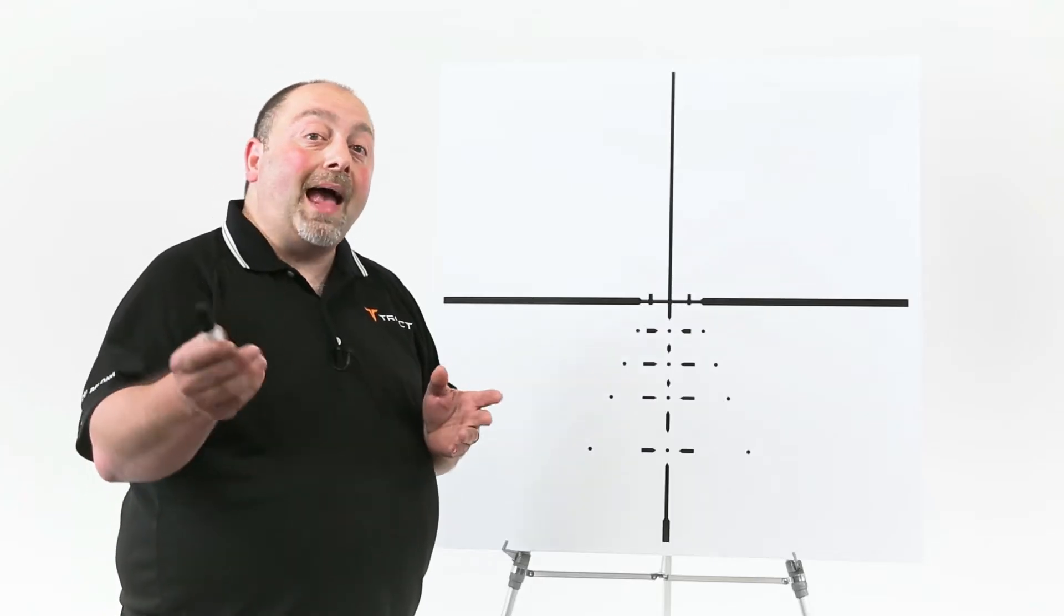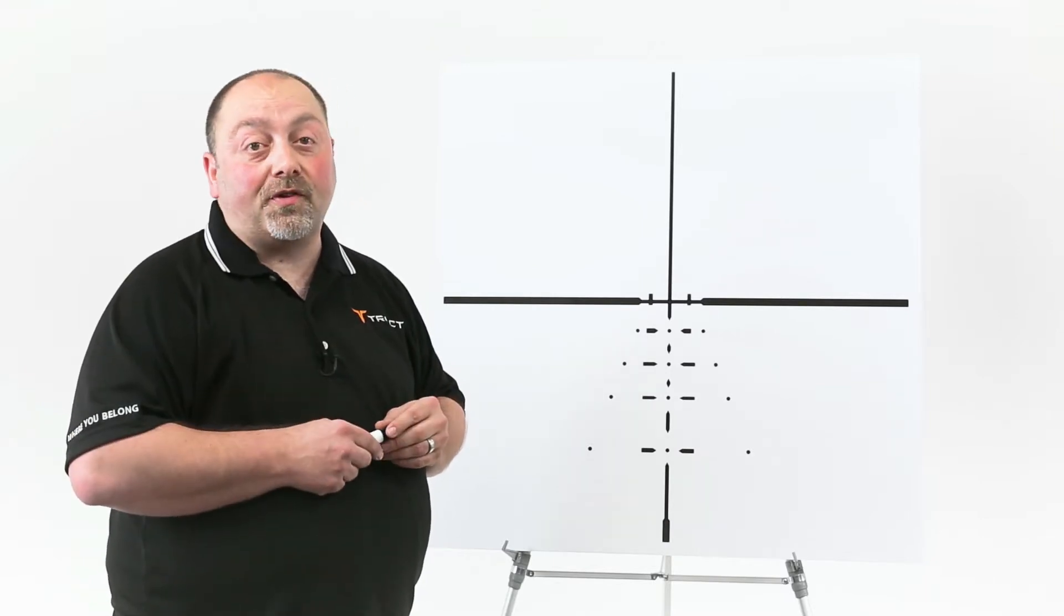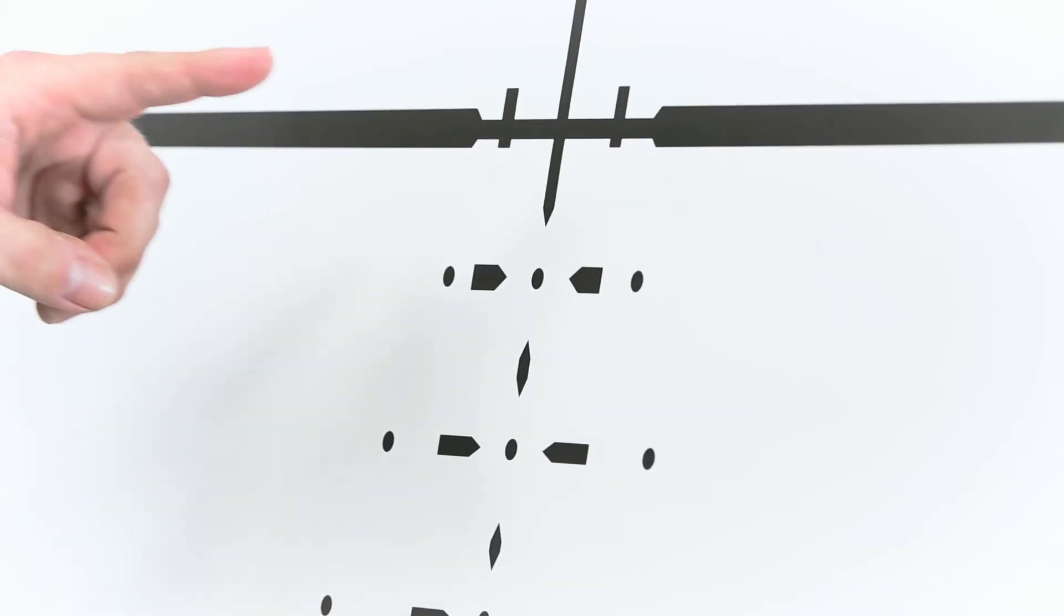If you're shooting a magnum cartridge something in the neighborhood of 3,000 feet per second you would then zero the rifle at 200 yards and then your dots would be 3, 4, 5, and 600 yards respectively.